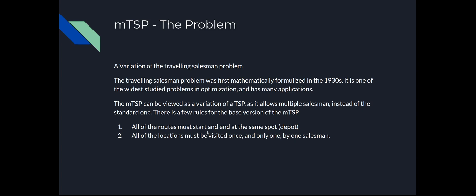The Multiple Travelling Salesman Problem, which from here on out I'll just call the MTSP, is a variation of the Travelling Salesman Problem which, if you're familiar with optimization or algorithms, you've almost certainly heard of before. It was originally formulated in the 1930s and to this day is one of the more widely studied problems in optimization. The MTSP allows multiple travelers instead of the standard one, and all routes must start and end at the same spot, with all locations visited exactly once by one salesman.